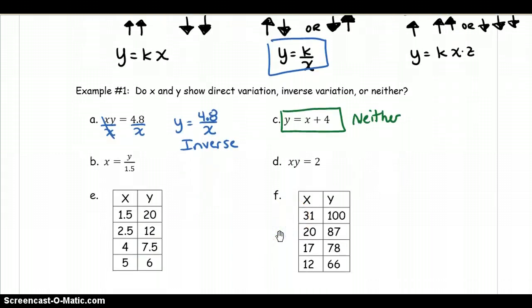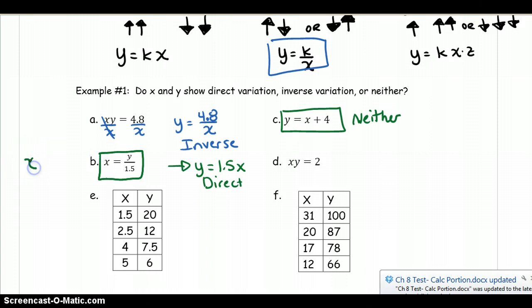Let's look at b. We have x equals y over 1.5. So what I do, once again, is get y by itself. And I notice right away that y equals 1.5 times x. So this is a direct relationship, because our k is being multiplied by x. Now you could have also seen that in b without doing anything else. This is also a direct relationship, because we have 1 over 1.5 as a number, and y is right next to it on top. Since y is being multiplied by a k value, a constant, we know that it's also a direct relationship. So without solving for y, you can see that relationship.